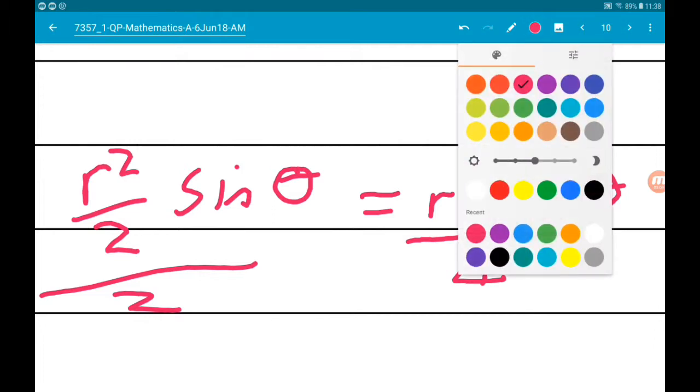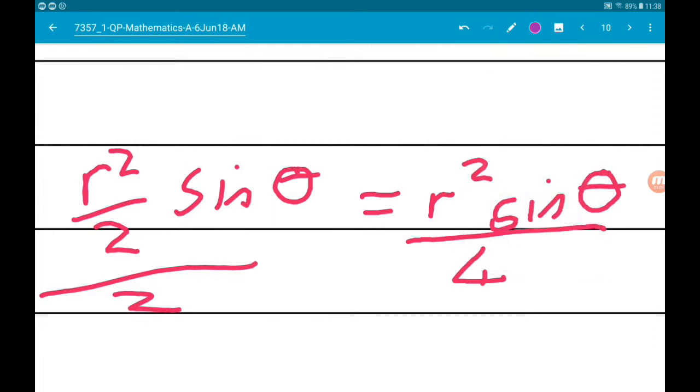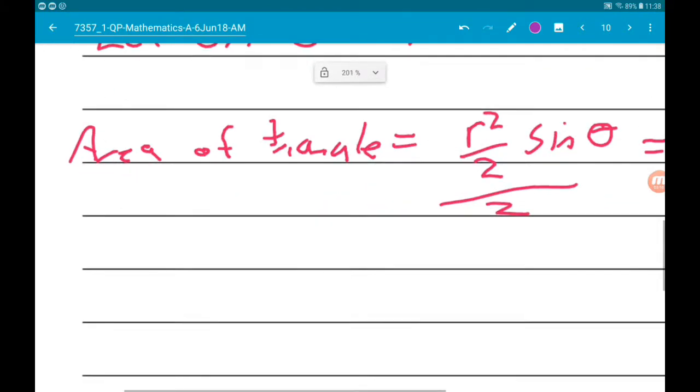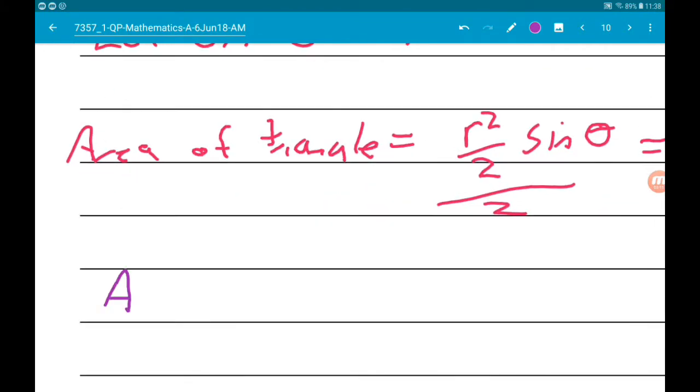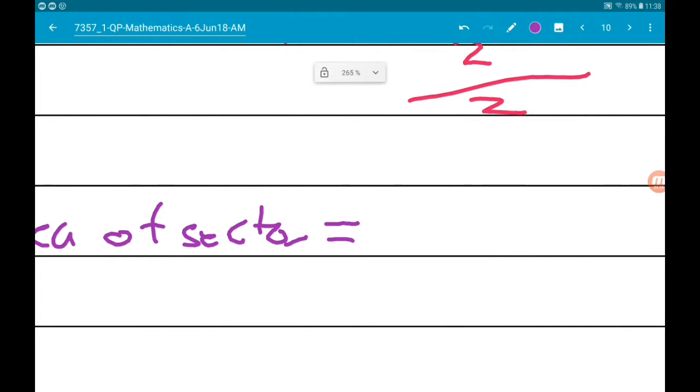Now, for the area of the sector. So, area of a sector is one half R squared theta. So, R squared theta over two.